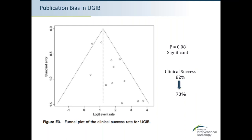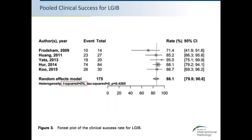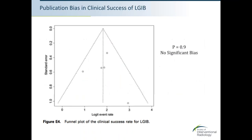For the lower GI bleeding group out of 175 patients, 152 (86%) saw clinical success. Heterogeneity across studies was 0%, indicating significant similarity in outcomes. Publication bias was P = 0.9, essentially zero. After adjusting for publication bias, clinical success showed minimal change — dropping from 86% to 85%. Returning to upper GI complications, the major complication rate was about 5.4%, with zero heterogeneity across studies. Publication bias was significant (P = 0.06), leading to an increase in complication rate to 11% from 5% after adjustment.